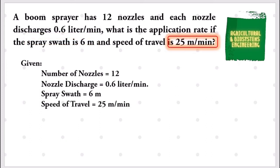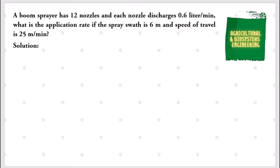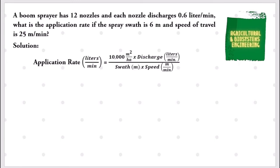The required in the problem is the application rate. After determining the given and the requirement, we can proceed to our solution. To solve for the application rate, we will be using the formula: Application Rate in liters per minute equals 10,000 square meters per hectare multiplied by the discharge in liters per minute, all over the swath in meters multiplied by the speed in meters per minute.